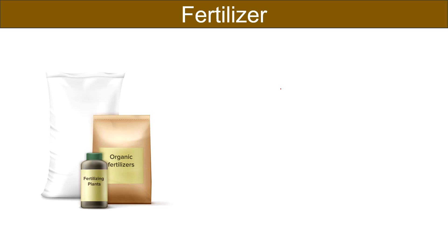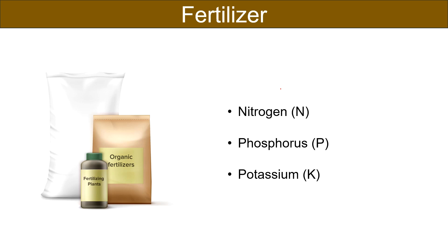The primary nutrients found in fertilizers are nitrogen, phosphorus and potassium. While nitrogen is essential for leaf and stem development as well as overall plant growth, phosphorus is important for root development, flowering and fruiting. Lastly, potassium is vital for overall plant health, stress resistance and fruit quality.